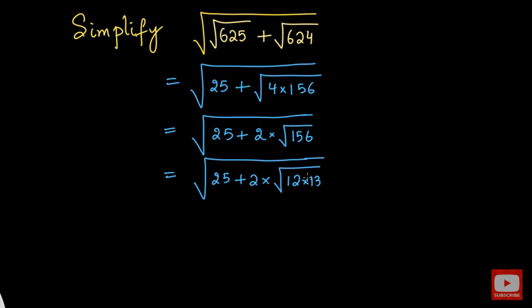Now we have 12 and 13 inside the square root. I want to relate this 12 and 13 with this 25. How can we relate both of them? I guess you must have figured that out by now. We can write 25 as 12 plus 13.